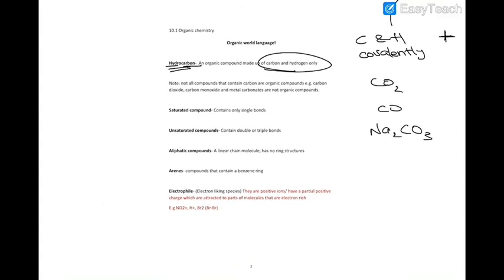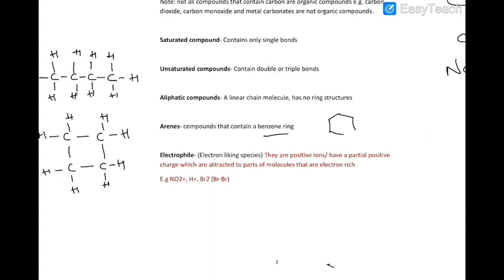Saturated is when there's only single bonds. Unsaturated is when there is double or triple bonds. Aliphatic is when there is a single chain, there is no ring. Arene is when you have a benzene ring.